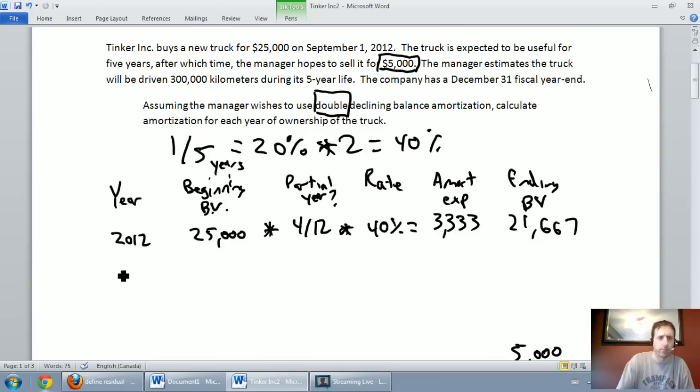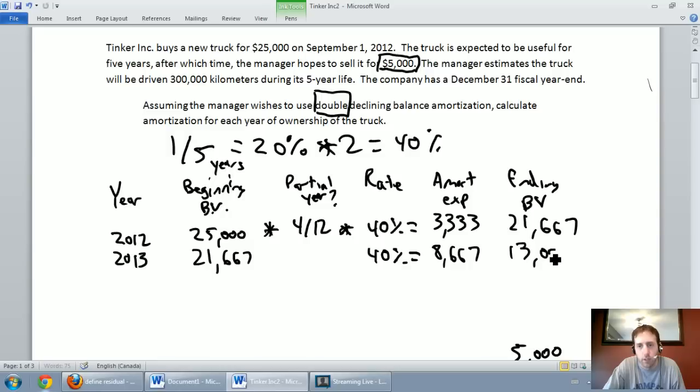Let's do 2013. What did I start 2013 with in terms of book value? The book value at the beginning of 2013 was 21667. Is it a partial year? No. I'm not even going to worry about that column. The amortization rate is 40%. 21667 times 40% is 8667. Our amortization expense is 8667, bringing the ending book value from 21667 minus 8667, and I get an ending book value of $13,000.